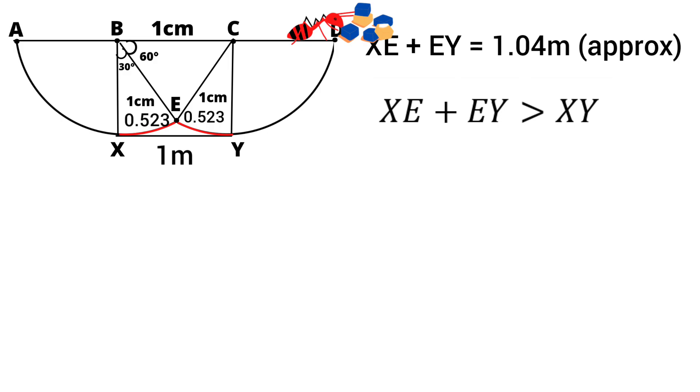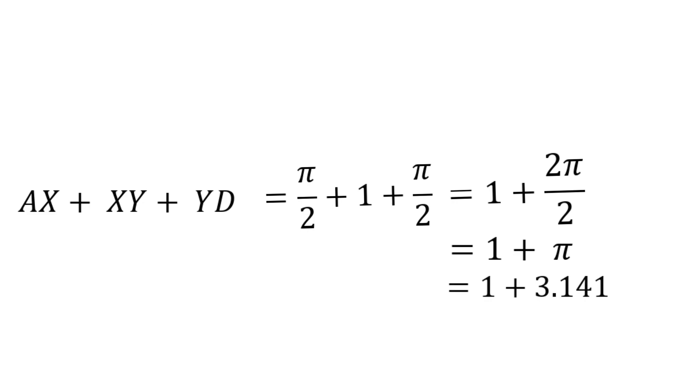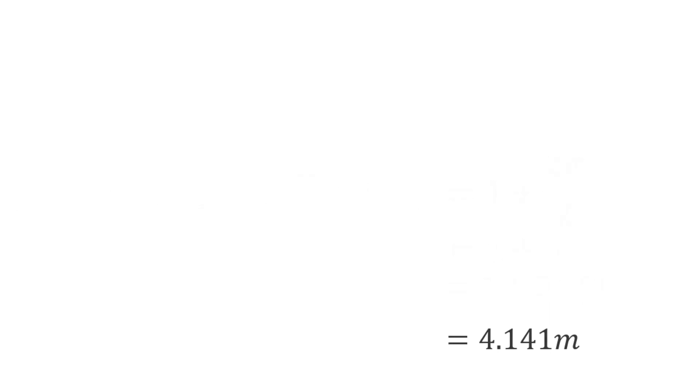So, the minimum distance ant must travel to reach the sugar particle is AX plus XY plus YD. Lengths of AX and YD are π by 2 and the length of XY is 1. So, π by 2 plus 1 plus π by 2 which is equal to 1 plus 2π by 2. Here, 2 gets cancelled, we have at last 1 plus π. The approximate value of π is 3.141. So, the minimum distance ant must travel to reach the sugar particle is 4.141 meters.